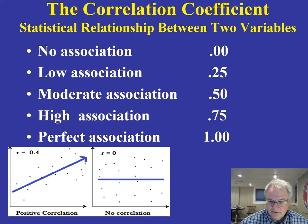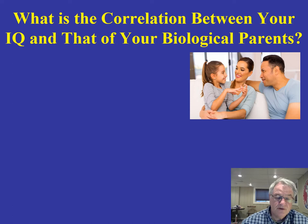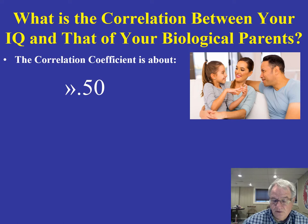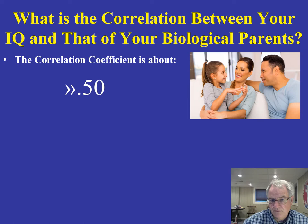Let's see how this plays out when we look at the association between your IQ and that of your biological parents. You share a lot of genes with your parents, and if IQ is a product of genes passed down to you, you'd expect similarity between your IQ and your parents'. The correlation coefficient computed for parents and their biological offspring is about 0.50, a moderate level of correlation suggesting a relationship that may be genetic.